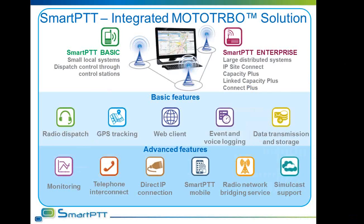SmartPTT comes in two options. SmartPTT BASIC is a solution for small local radio networks where a control station is used to dispatch the system. SmartPTT Enterprise allows dispatch and control over complex Motorola MotoTURBO networks such as IP Site Connect, Capacity Plus, Linked Capacity Plus, and Connect Plus. The dispatcher software gives opportunity to control and log the flow of data and voice in a radio network, request location of subscribers, and monitor the state of repeaters.